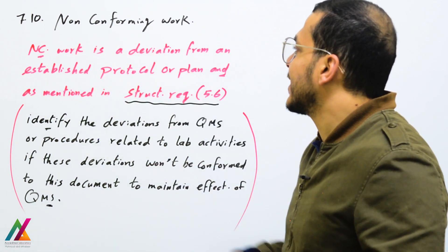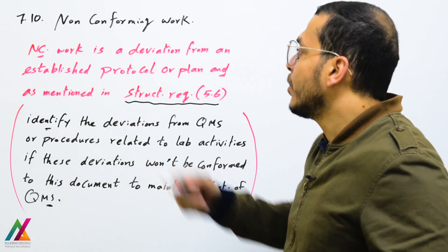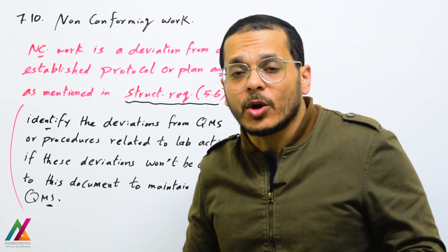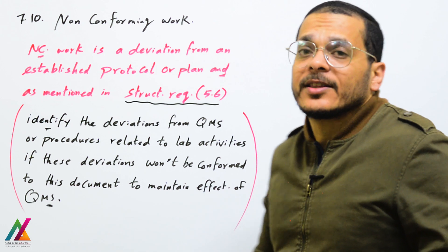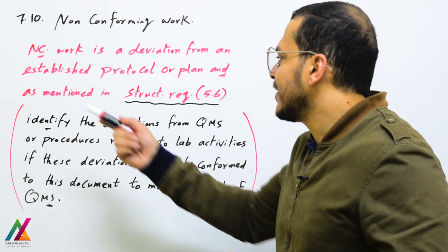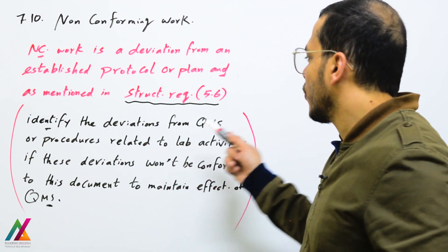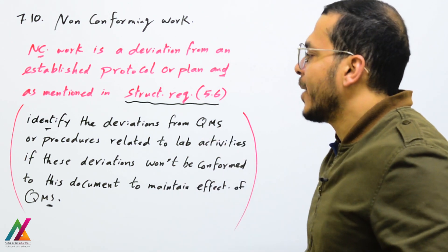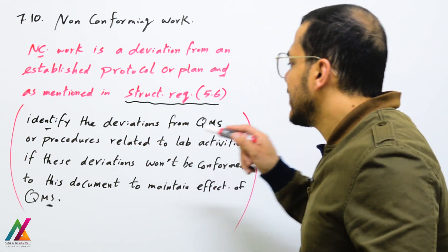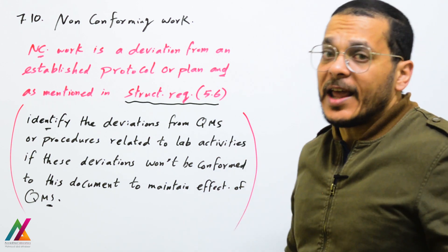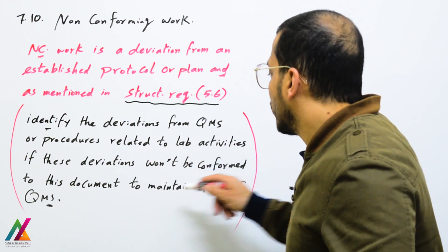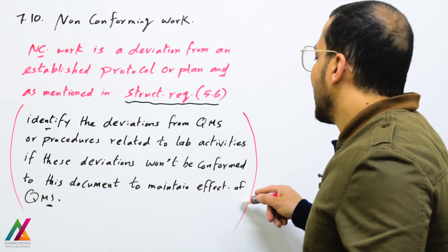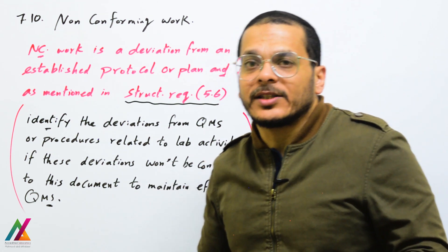Non-conforming work is a deviation from an established protocol, plan, or requirement of the document, customer requirement, accreditation body requirement, or any other established requirement. As mentioned in structural requirement clause 5.6, there should be a person who can identify deviations from the quality management system or procedures related to lab activities, to maintain the effectiveness of the quality management system.